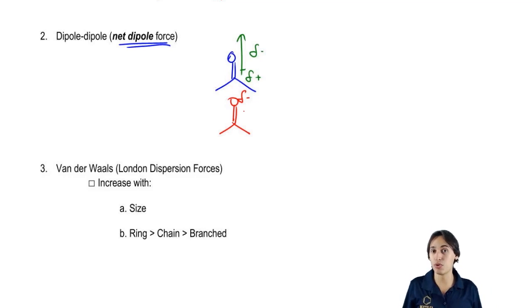This is only possible though if you have a net dipole. If there's no net dipole, then you're not going to be able to form this force. Does that make sense? So this is what we call the second strongest force. It's not quite as strong as hydrogen bonding, but it still is a pretty strong force.